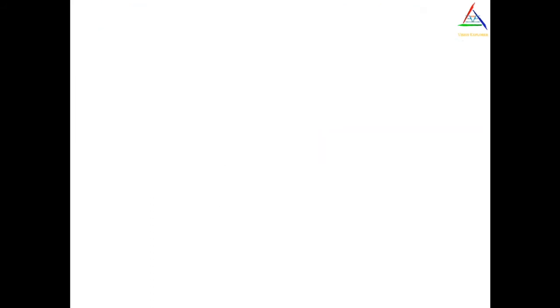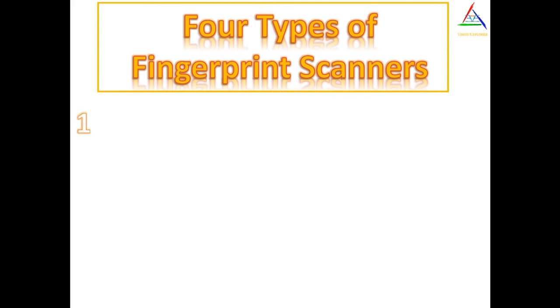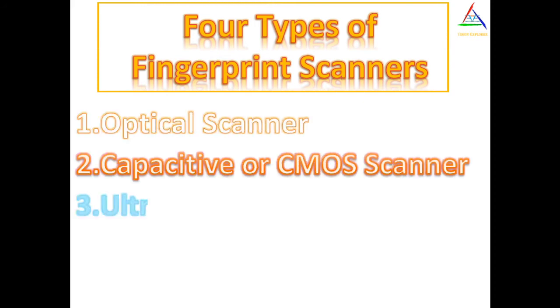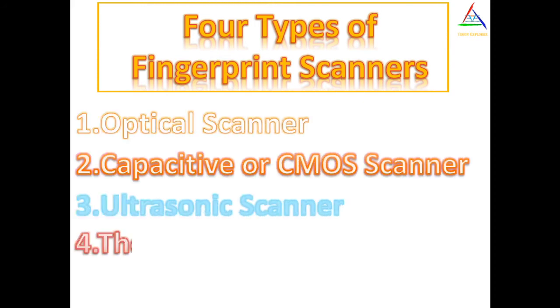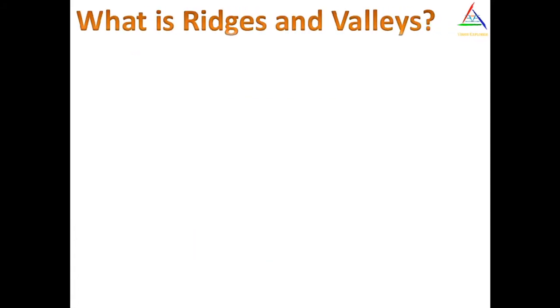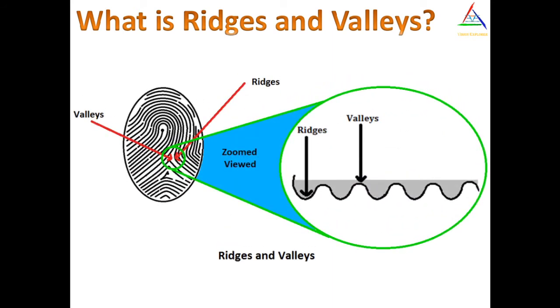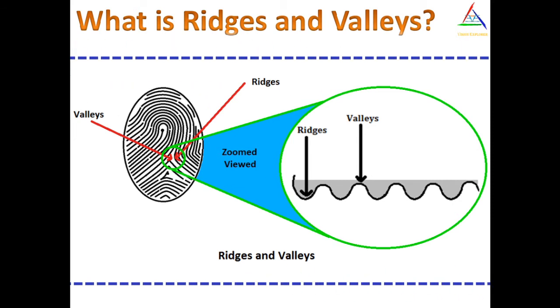We have four types of fingerprint scanner: optical scanner, capacitive scanner, ultrasonic scanner, and thermal scanner. Now we need to know what ridges and valleys are in a fingerprint. Ridges are the curved lines, and valleys are the areas between these curved lines.